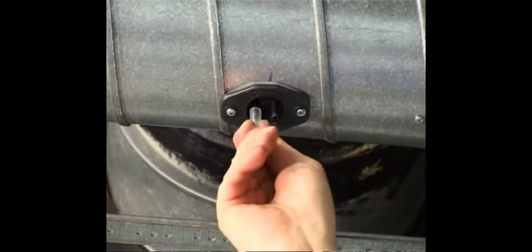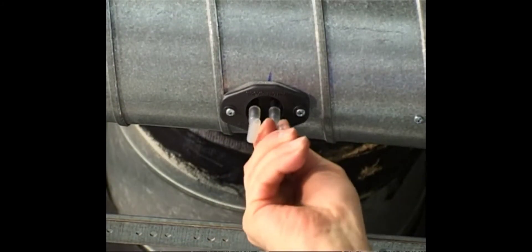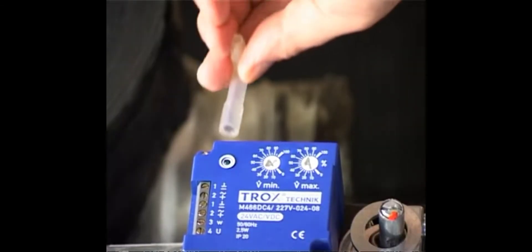Subsequently, the provided tube adapters are mounted onto the connecting spigots of the sensor and of the Trox compact controller.